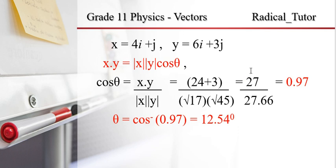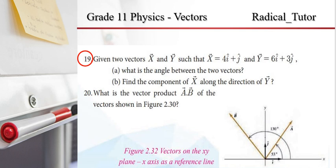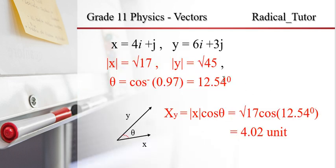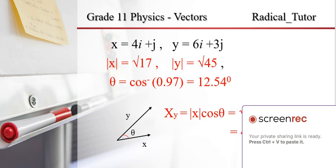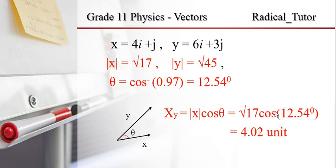So this is the angle between x and y. The angle between x and y is found. If you find the component of x along the direction of y, this is the magnitude of x times cos theta. This is x along the direction of y, because x in the direction of y means cos theta — the magnitude of x in the direction of y.